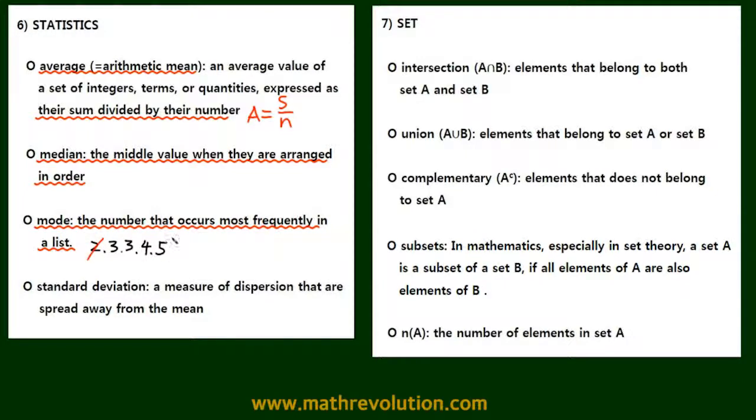We're trying to get the middle value, so we cross out 2 and 5, and then 3 and 4. The middle value of the set is 3, so the median equals 3. Then the mode - the number that occurs most in this set is also 3. That's how we calculate the median and mode.